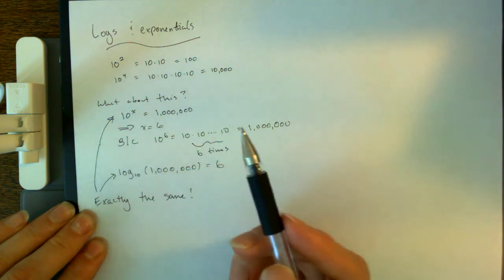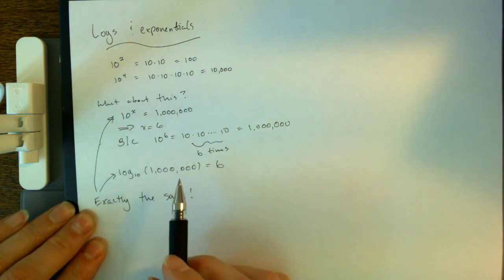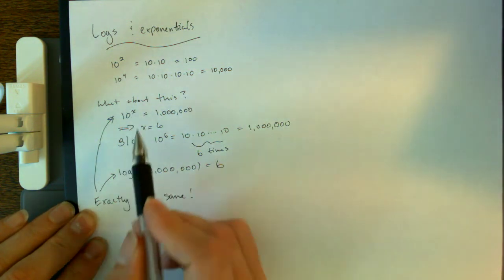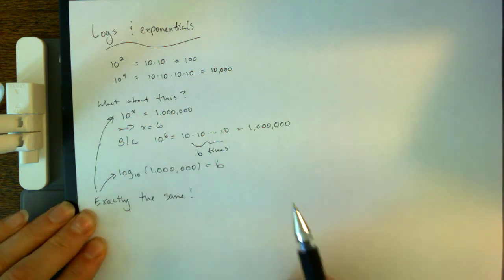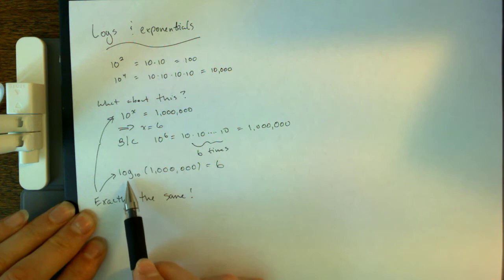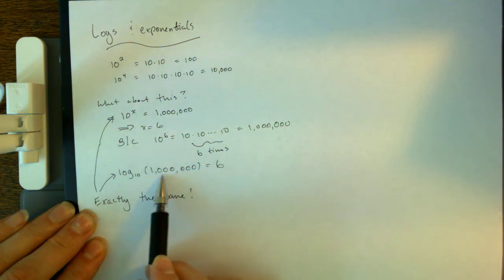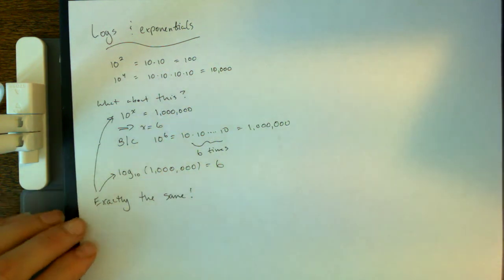This is just putting x up here in the exponent, and this is saying, well, we need a function that actually gives us this number. What power of 10 do I need in order to get a given result? And that function is the logarithm, log base 10 of a million. So this expression says exactly the same thing as this does up here. What power do I have to raise 10 to in order to get this result? And the answer is 6.